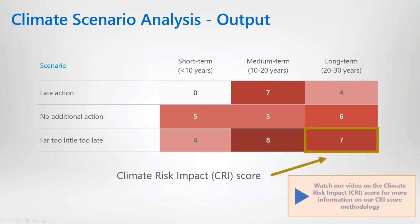Furthermore, it is the impact experienced under a far too little too late scenario over the longer term — that is the bottom right number in this matrix — that directly feeds into an asset's climate risk impact score, providing a direct link between the two pillars of the framework. The climate risk impact score, or CRI score, is discussed in more detail in a separate video within our climate analysis series.